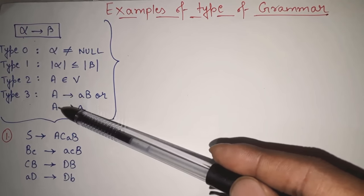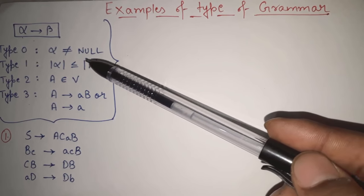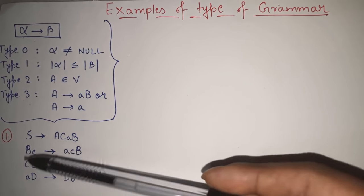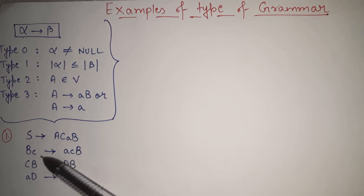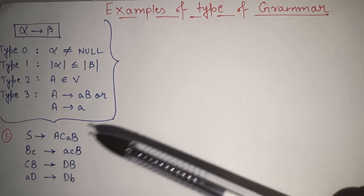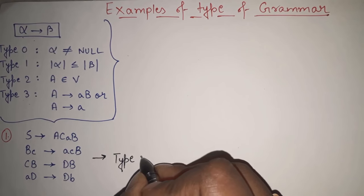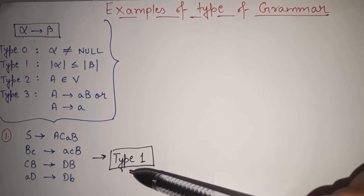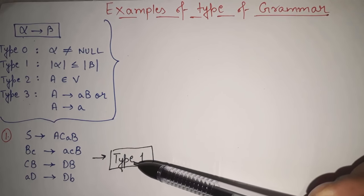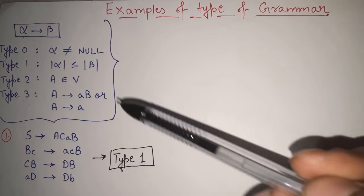So we can directly conclude that it can neither be type 3 nor type 2. Next, we will check for type 1. The only condition for type 1 is the length of alpha must be less than or equal to the length of beta. Checking: 1 ≤ 4, correct; 2 ≤ 3, correct; 2 ≤ 2, correct; 2 ≤ 2, correct. All conditions of type 1 are satisfied. So I can say that this grammar is type 1 — context sensitive grammar. It is type 1 and type 0, but not type 2 or type 3.